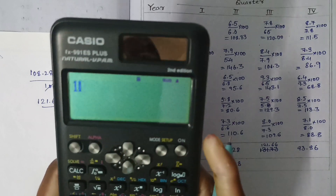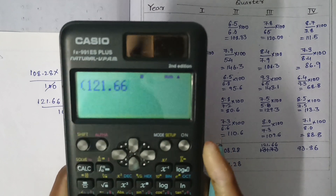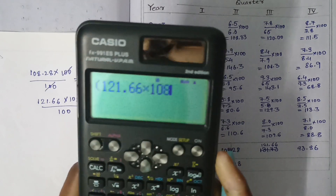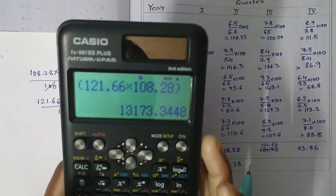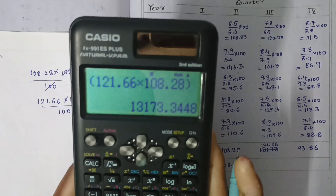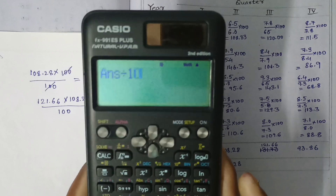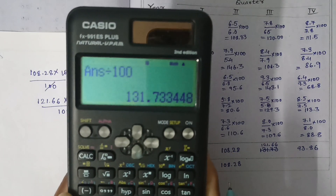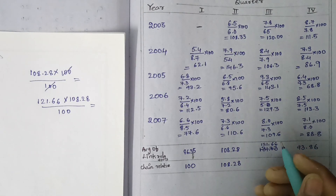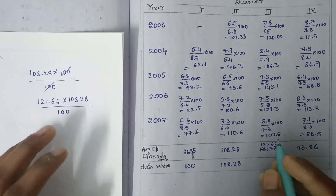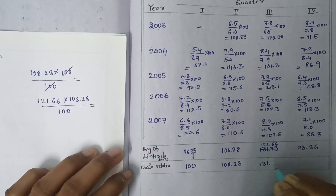120.166 multiplied by 108.28 equals 13,173.34. We divide by 100 and get 131.73. So the chain relative for the third period is 131.73.